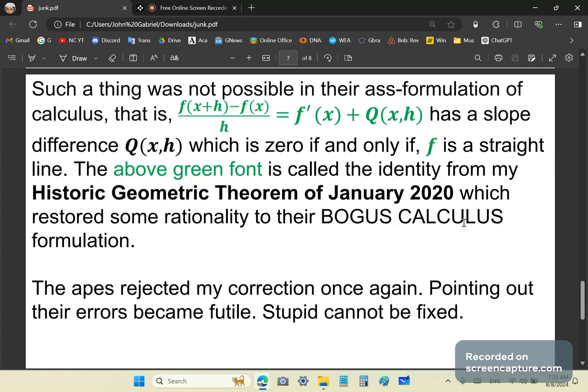And such a thing was not possible in their ass formulation of calculus. That is, in my historic geometric theorem, I showed that q of xh cannot be an auxiliary equation because it's the slope difference which is zero in only one case, in the case that f is a straight line. So I restored some rationality to their irrationality by introducing the historic geometric theorem.